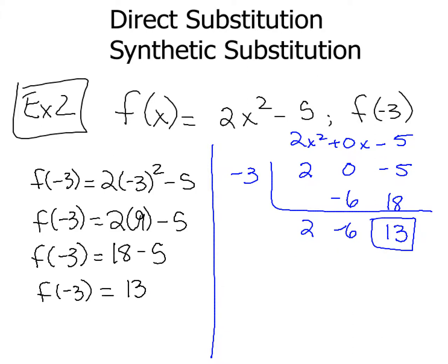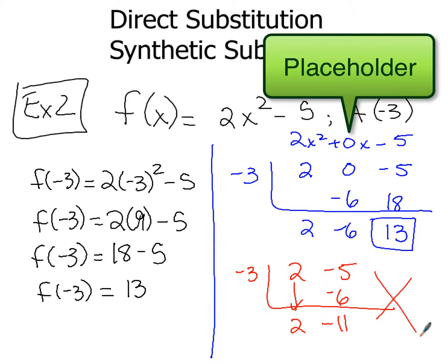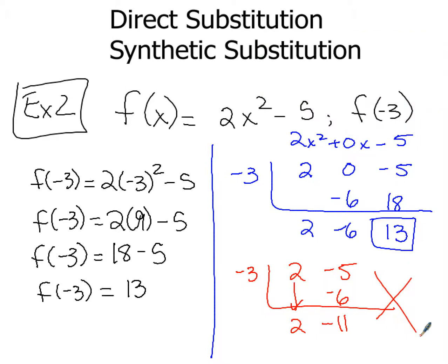Now, what if we did that mistake? Say we ended up just writing it like this. We did -3, and we end up with just 2, and then -5. Watch what happens. Bring down the 2 first. -3 times 2, I get -6, -5 + -6, I get -11. So this is not the way to do that problem, right? Don't make that mistake. That's the common mistake people will make. So this way is incorrect. Make sure you add the 0 as a placeholder any time you're missing a term in your polynomial.